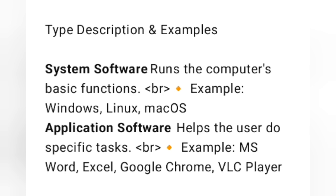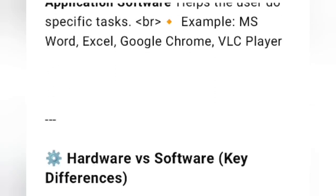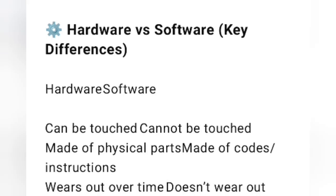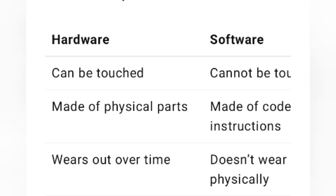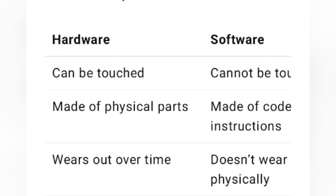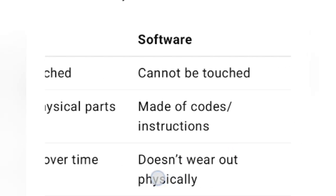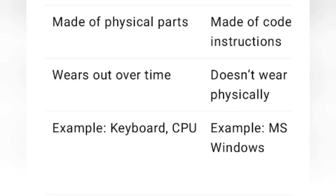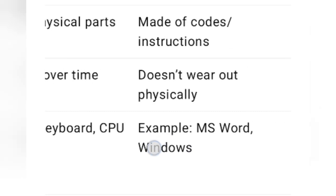The difference between hardware and software: hardware can be touched; software cannot be touched. Hardware is made of physical parts; software is made of codes and instructions. Hardware wears out over time; software does not wear out physically.